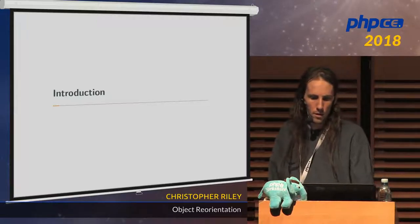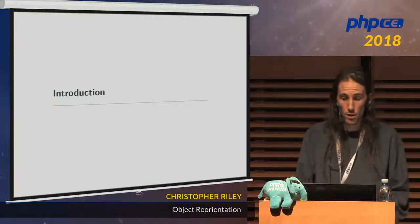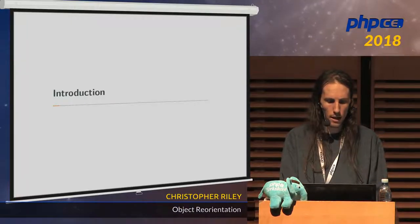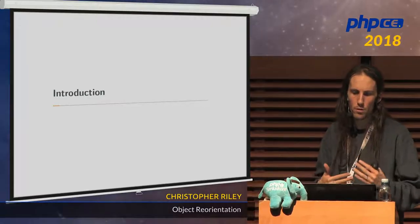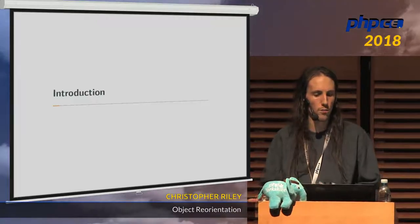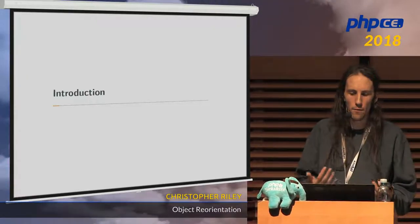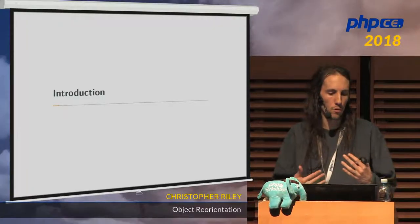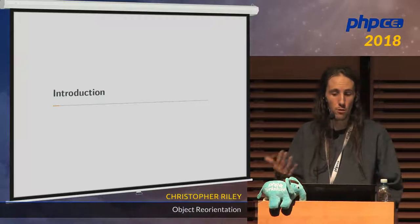This is a talk called Object Reorientation. The idea behind it is that we're going to try and go a bit beyond the standard rules that you might already know, such as SOLID and DRY, and instead look at how we can leverage the power of object-oriented design to write code that is easier to understand, to change, and to reason about.